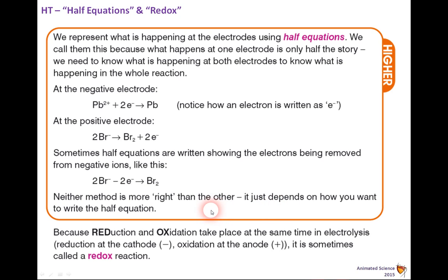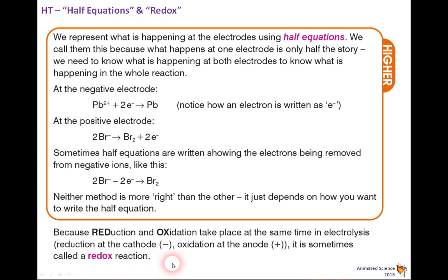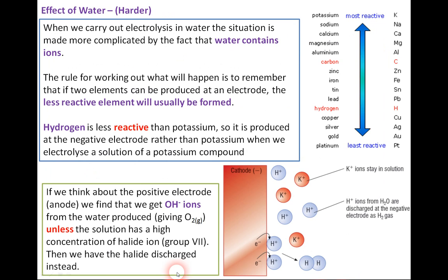In your exam you might see both. Because reduction and oxidation take place at the same time in electrolysis — reduction at the cathode (negative) and oxidation at the anode (positive) — it is sometimes called a redox reaction. This is particularly important for higher tier, and for higher tier you need to be able to balance these equations.